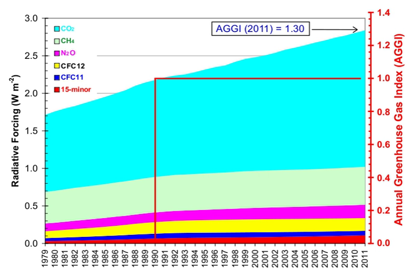The annual airborne fraction increased at a rate of 0.25 ± 0.21% per year over the period 1959–2006. The major atmospheric constituents — nitrogen, oxygen, and argon — are not greenhouse gases because molecules containing two atoms of the same element, such as N2 and O2, have no net change in the distribution of their electrical charges when they vibrate, and monatomic gases such as argon do not have vibrational modes. Hence they are almost totally unaffected by infrared radiation.